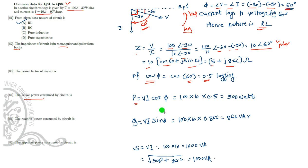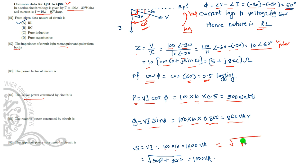Active power = VI cos φ = 100 × 10 × 0.5 = 500 Watt. Reactive power = VI sin φ = 100 × 10 × sin(60°) = 866 VAR. Apparent power S = VI = 100 × 10 = 1000 VA. You can verify this as √(P² + Q²) = √(500² + 866²) = 1000 VA. So we have determined real, reactive, and apparent power.